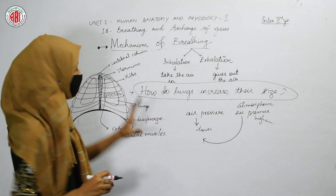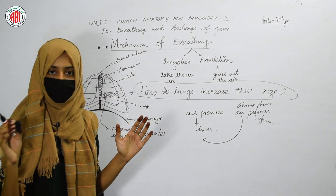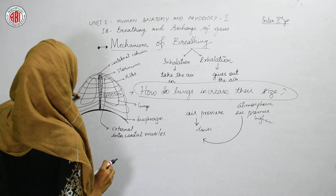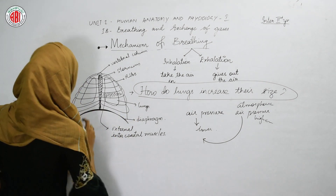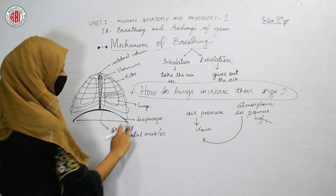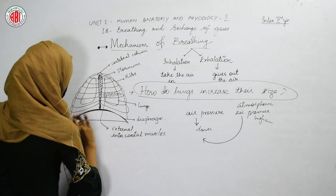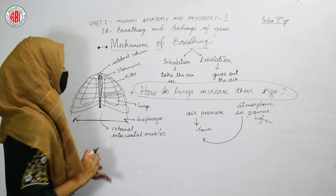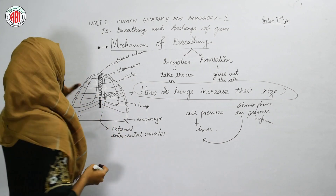This is how the mechanism of inhalation takes place. It is very simple. The ribs move upward, the diaphragm moves downward. The upward movement of the ribs and the downward movement of the diaphragm provides space for the thoracic chamber to increase. As soon as the thoracic chamber increases, the lungs also increase. When the volume of the lungs increases, the air pressure decreases. Pressure is inversely proportional to volume — when space is more, pressure is less.